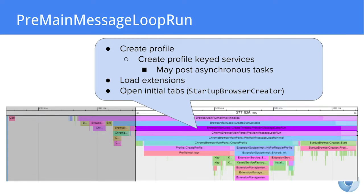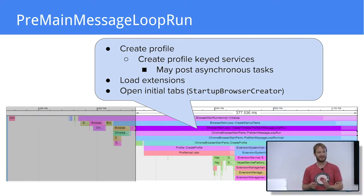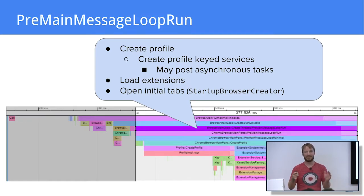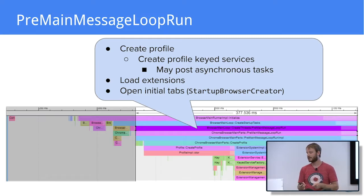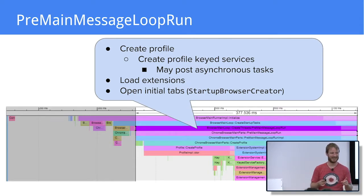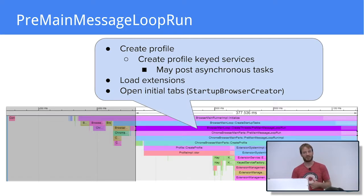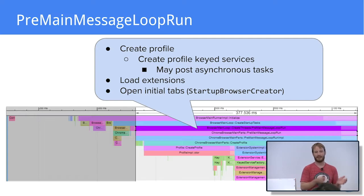Next, we run the pre-main-message-loop-run function, which is very often the longest one in Chrome's synchronous initialization. The first important thing this function does is to create the user profile and load keyed services. Examples of keyed services include history, the new tab page feed, autocomplete, bookmarks, content permissions, and translate — all these things that depend on the user profile are called keyed services.